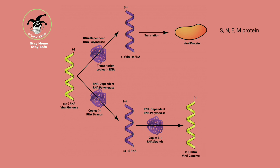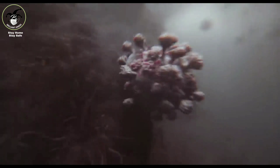The genetic material ssRNA splits up into two by protease enzyme. One is SS positive RNA, which is responsible for protection of the viral genome. Another one is viral mRNA, which is responsible for the production of viral protein.